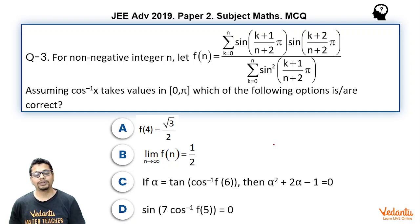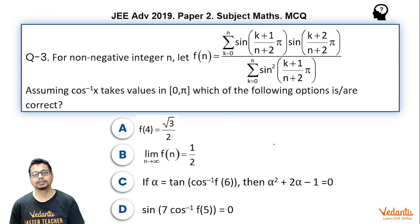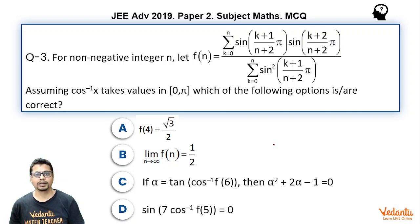For non-negative integer n, let f(n) equal sigma k=0 to n of sine((k+1)/(n+2) · π) · sine((k+2)/(n+2) · π), divided by sigma k=0 to n of sine²((k+1)/(n+2) · π). Assuming cos⁻¹(x) takes values in [0, π], which of the following options is or are correct? There are four options and it is a multiple correct type question.